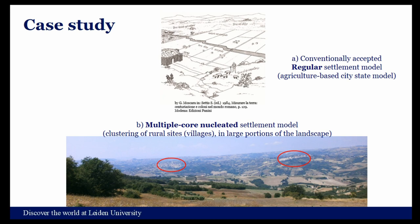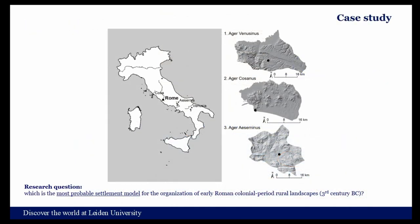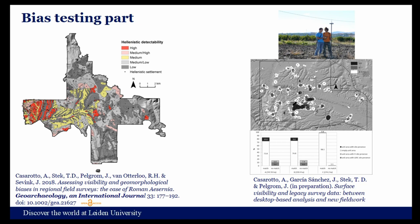The second model proposes instead the presence of a dominant clustered, village-based settlement system both in pre-colonial and early Roman colonial periods. My PhD research aimed to test these two theories in three early Roman colonial landscapes: the colonies of Venusia, Cosa, and Aesernia, establishing which model was more probable based on legacy site-based survey data. Survey data are intrinsically biased, and to propose an accurate territorial reconstruction it is necessary to test whether these data are representative enough — this is precisely the goal of the bias testing step within the procedure.